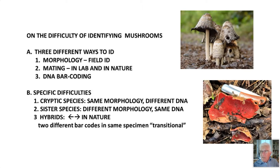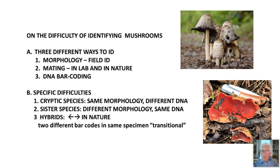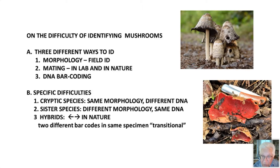These three methods don't necessarily agree — many times they disagree. There are also specific difficulties. We call some of these 'cryptic species' — they have the same morphology, look almost exactly the same, but have different DNA. Because they have different DNA, they can have different effects in the environment, and if that environment happens to be your body, they can have different effects in your gut and nervous system. You can eat a mushroom that looks edible but isn't — we'll see examples of that.